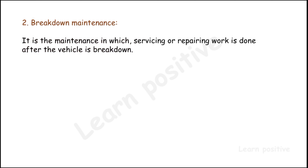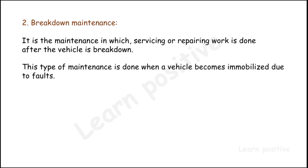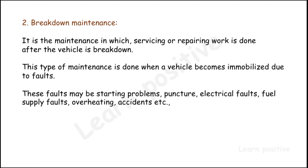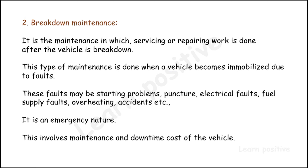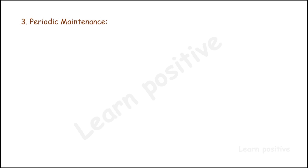The second type is breakdown maintenance, which is servicing or repair work done after a vehicle breaks down. It is also called unscheduled maintenance. This type of maintenance is done when a vehicle becomes immobilized due to a fault — such as starting problems, punctures, electrical faults, fuel supply faults, overheating, or accidents. These are emergency, natural problems handled on the road, and this maintenance involves increased downtime and higher service costs.